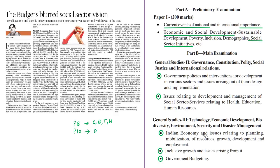Moving on to budget discussions — the union budget of 2020-21 was released on 1st February, and today there are two editorials on the budget. In the first editorial, the author criticizes that the government has not allocated enough funds for the social sector. The relevant syllabus is given for reference. This year's union budget is woven around three themes: Aspirational India, Economic Development for All, and Building a Caring Society.